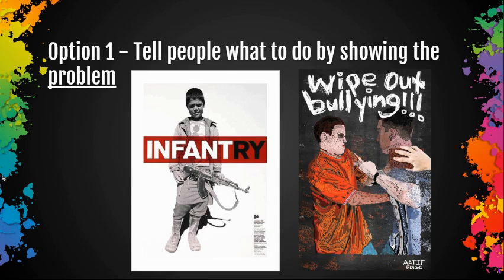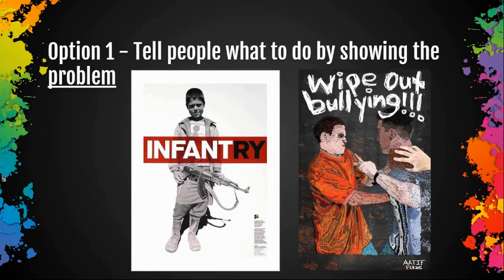Another very good option is to tell people what to do by showing them the problem — you're essentially making them feel bad. On the right, 'Wipeout Bullying' shows a hand using a sponge to clean off an image of one boy punching another. On the left, the word 'infantry' is used with 'infant' highlighted to show that the person is a child — because in some conflicts around the world, children are recruited or forced to act as soldiers and forced to kill others to save their own lives.